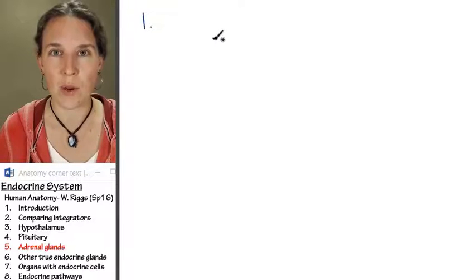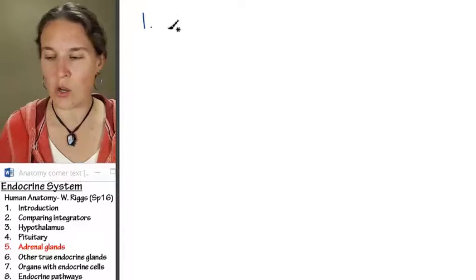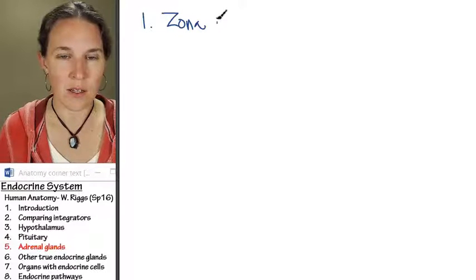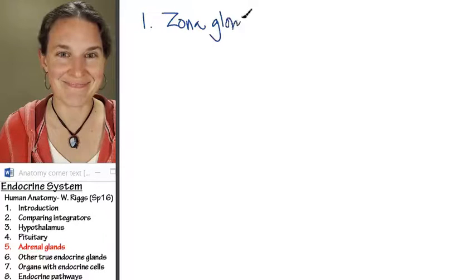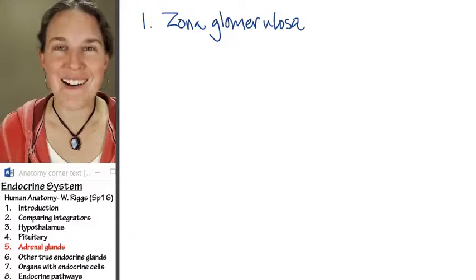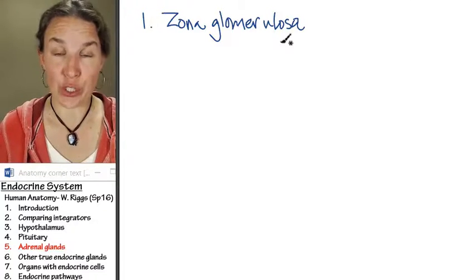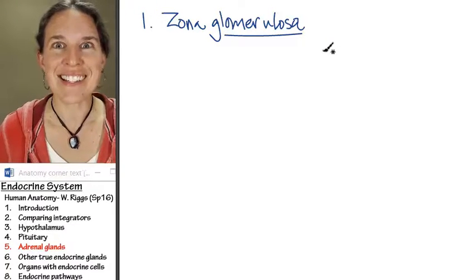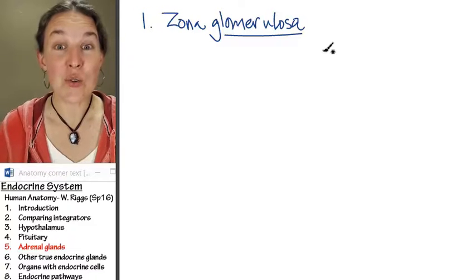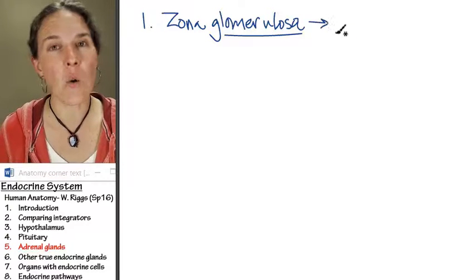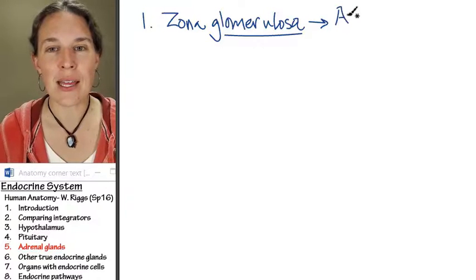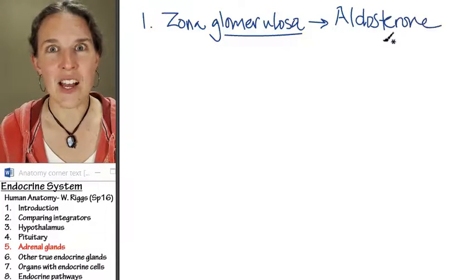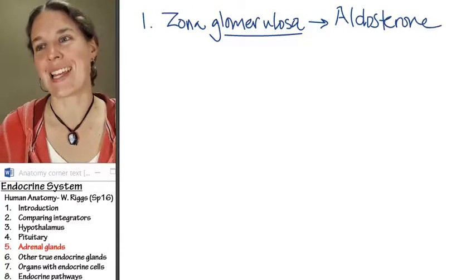Okay, superficial layer number one is called the zona glomerulosa. Now, before our next exam, you are actually going to learn about a structure called the glomerulus. The glomerulus is found in the kidney, and so zona glomerulosa produces a hormone called aldosterone. And aldosterone, guess who the target is? The kidney.